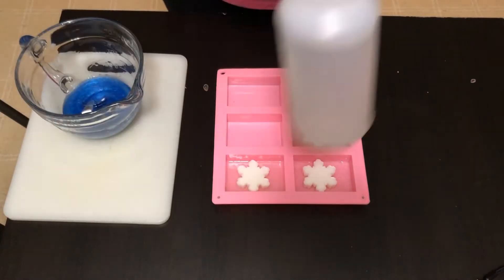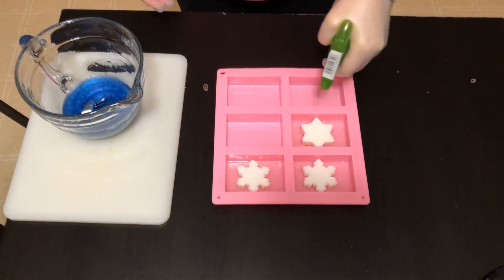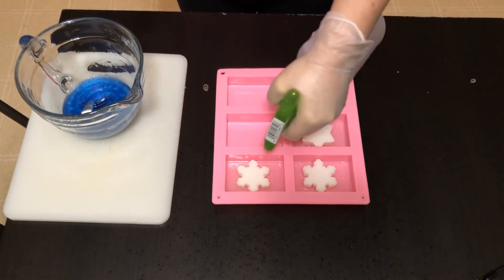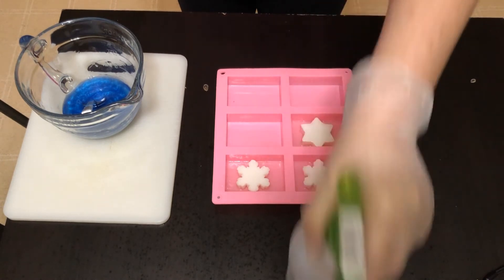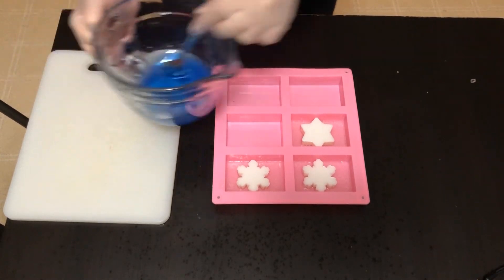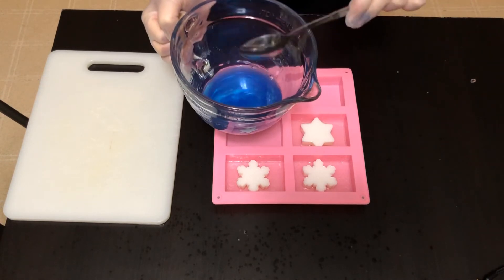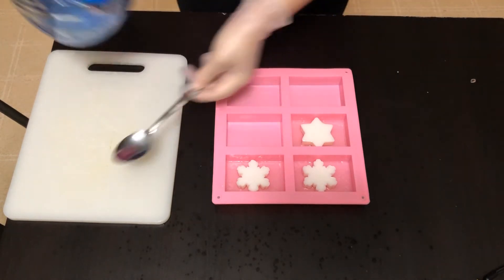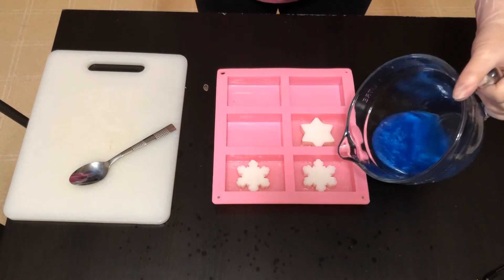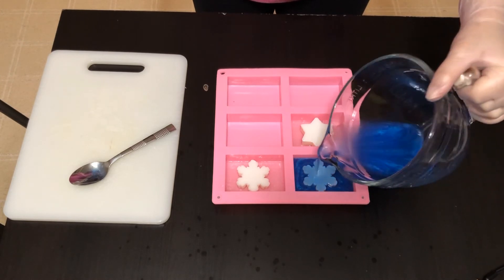Alright, so our soap has cooled down so now I'm going to go ahead and just spray these with some rubbing alcohol that way everything sticks. Give this another quick stir just to get rid of the skin that was starting to form on top. And then we're just going to cover the snowflakes.